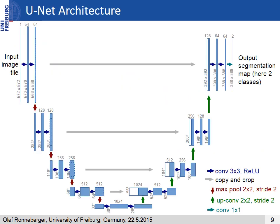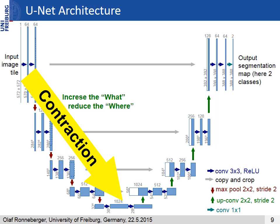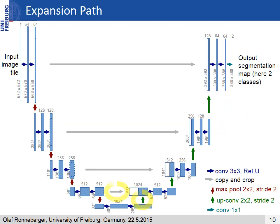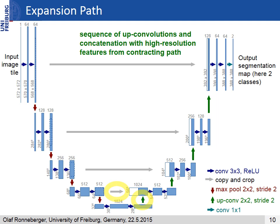After each max pooling operation we increase the number of feature channels by a factor of 2. All in all, the sequence of convolutions and max pooling operations results in a spatial contraction where we gradually increase the "what" and at the same time decrease the "where". A standard classification network ends here and maps all features to a single output vector. The UNET has an additional expansion path to create a high-resolution segmentation map, consisting of a sequence of up-convolutions and concatenation with the corresponding high-resolution features from the contracting path.